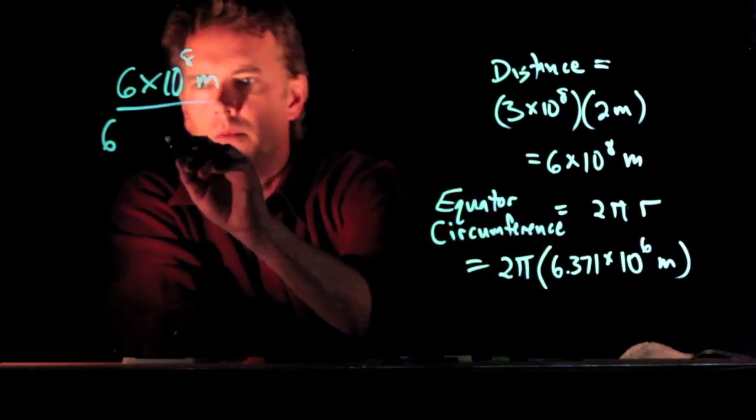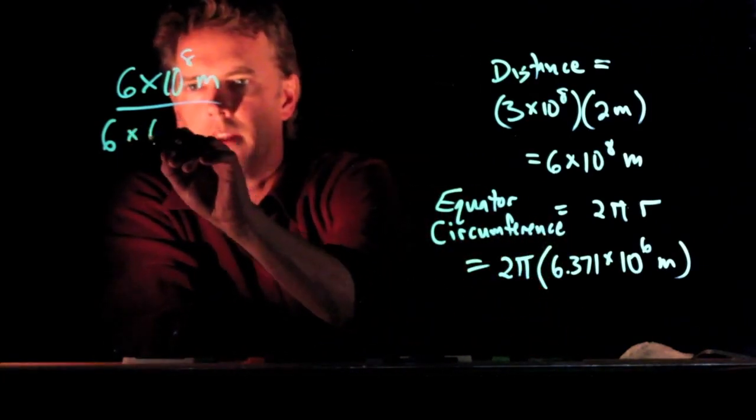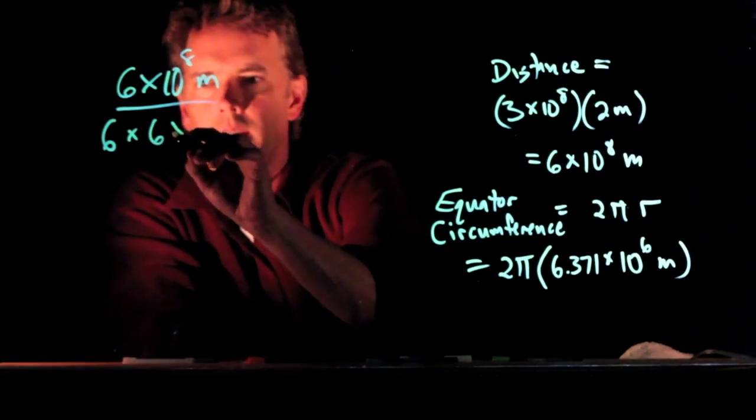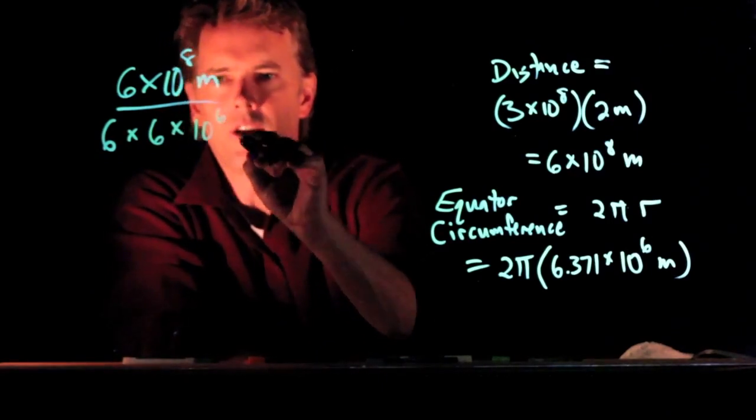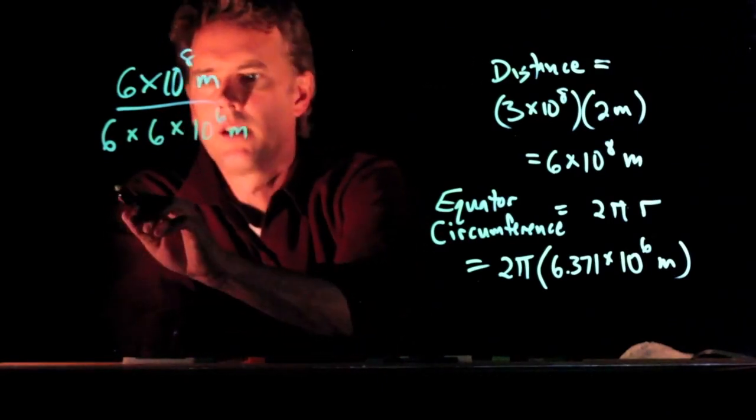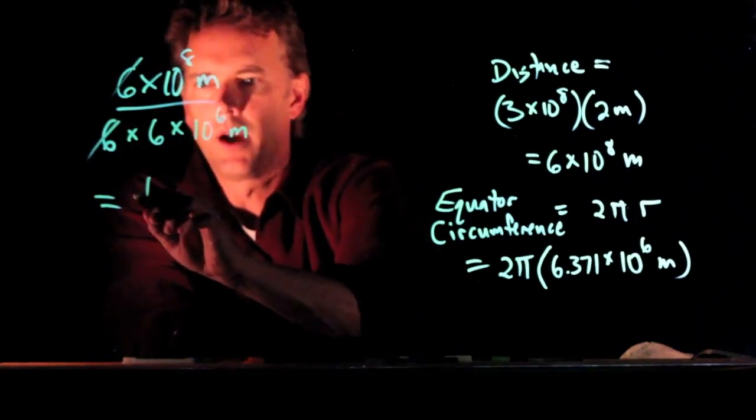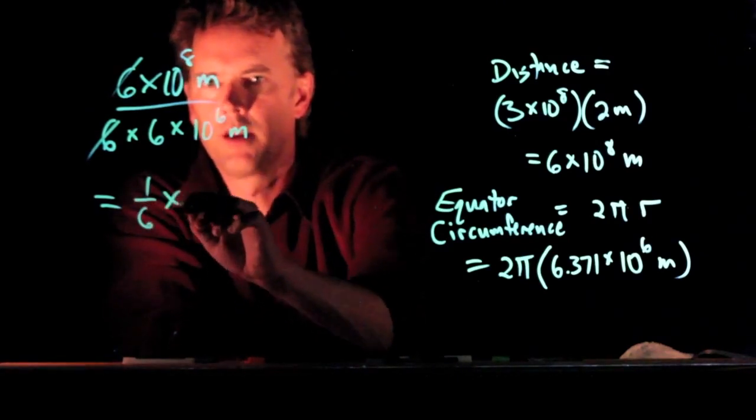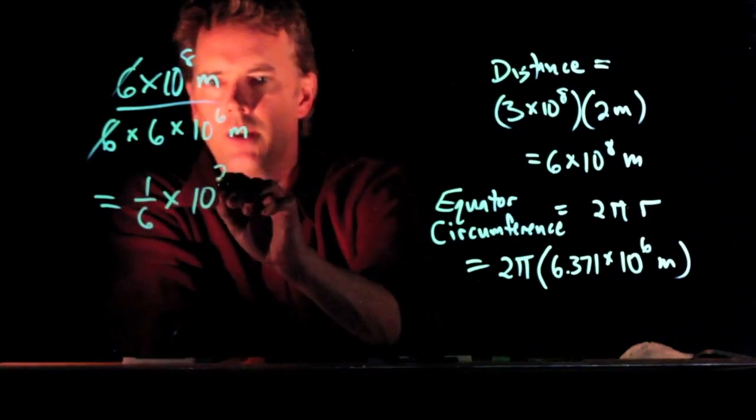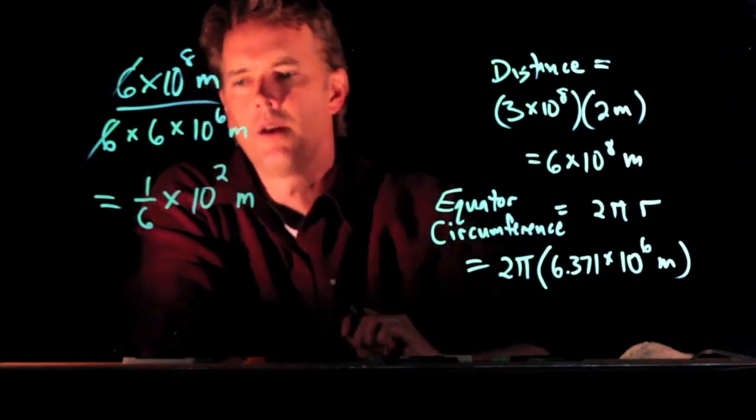What is the radius of the earth? It is six times 10 to the six meters. And so now we can cancel some stuff out. One of those sixes cancels out right there. We get one over six times 10 to the two meters.